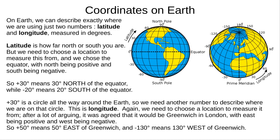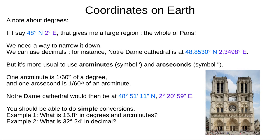You can use positive or negative, or compass degrees, but you should be able to switch between them. We've talked about degrees so far, but one degree is a big distance. I could say that I'm at 48 degrees north, 2 degrees east, but that could be anywhere in Paris, so we need to be more precise. We can use decimals — if I say I'm at 48.8530 degrees north, 2.3498 degrees east, I'm in Notre Dame Cathedral.